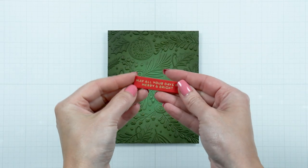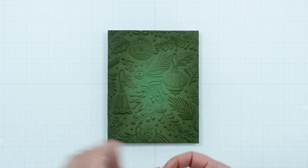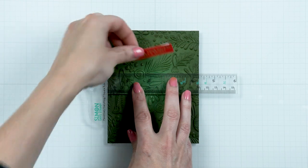Foil sentiment from our July 2023 Glimmer Hot Foil Kit of the Month in matte gold foil on red cardstock and foam mount the sentiment onto the card.